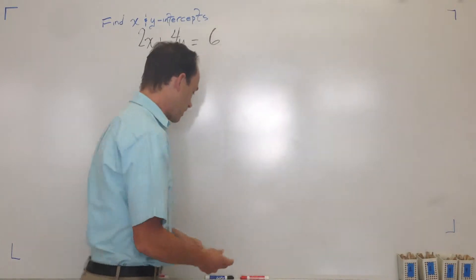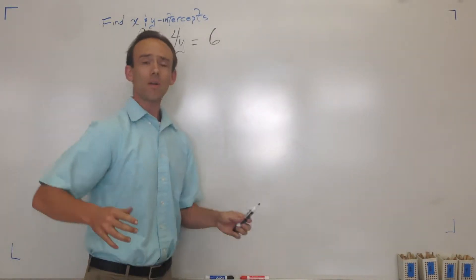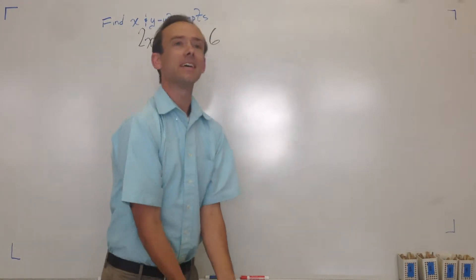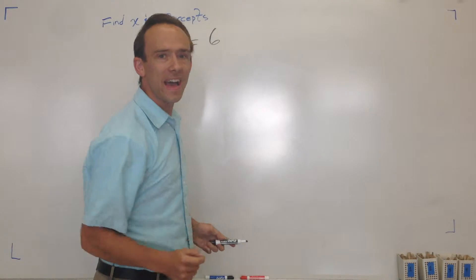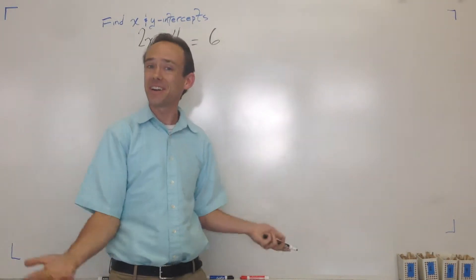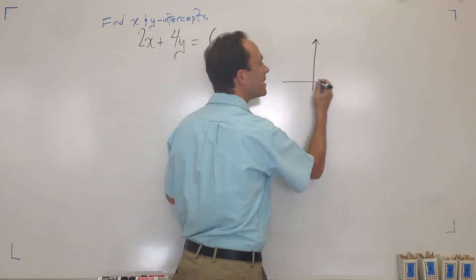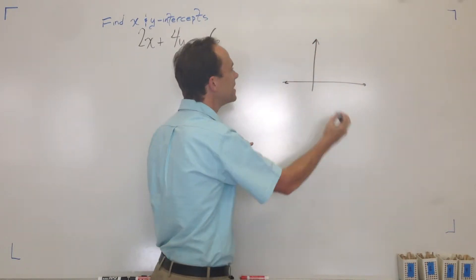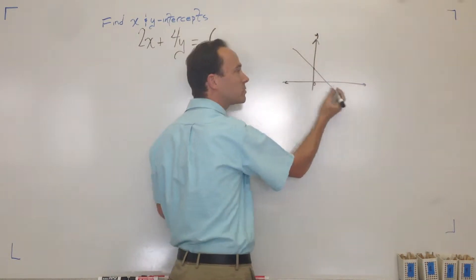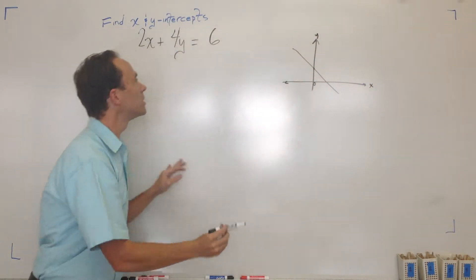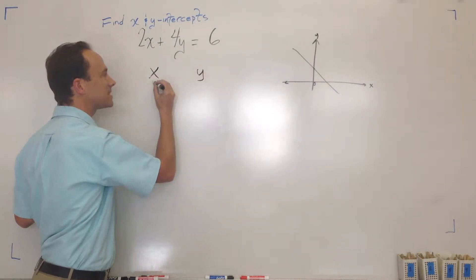We've got to find the x and y intercepts. The y-intercept is where the graph intercepts the y-axis — that's why they call it the y-intercept. If you look at any graph and draw any line, where it intercepts the y-axis is always when x is equal to zero. So I'll put it in a table because I like tables.